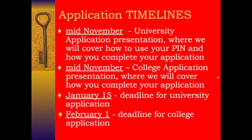Around mid-November, we would normally have an assembly to show you how to complete your applications. We'll do another video instead and step you through the process for both university and college applications. The deadline for university applications is January 15th, and the deadline for college is February 1st. Those deadlines are what are referred to as 'first consideration' — you can apply after those dates, but everyone who met the deadline will have their application considered first.